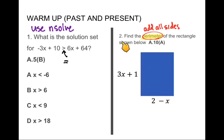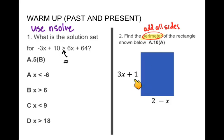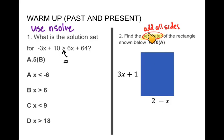For question number two, you're asked to find the perimeter of the rectangle shown below. This is what we've been talking about in class last week — how to simplify a polynomial expression. Remember, to find the perimeter you simply add all the sides.